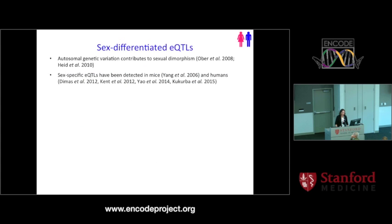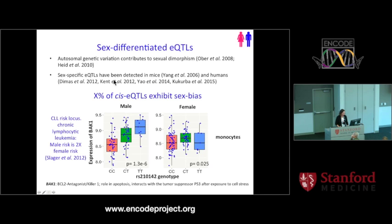We've also been doing work thinking about sex as a context. We can separate individuals into males and females and look for sex-specific eQTLs. The exact percentage is still being worked out as permutation testing for interaction tests has been tricky. But we do see male-specific eQTLs — one example is at a chronic lymphocytic leukemia risk locus where there's sexual dimorphism: male risk is twice that of females.